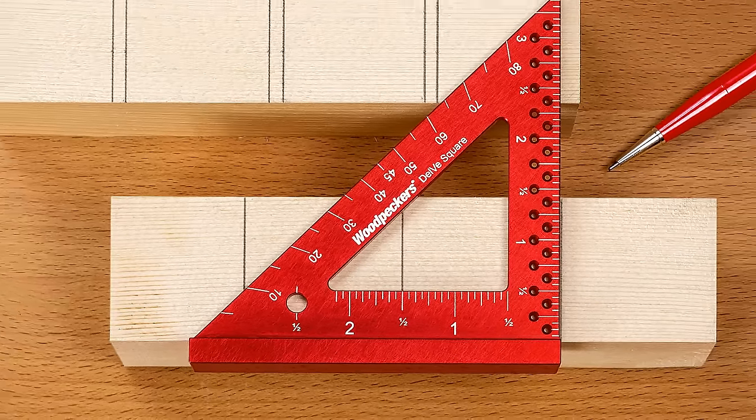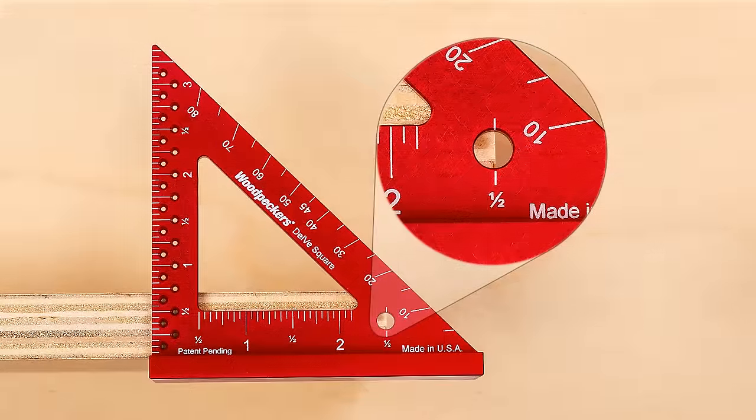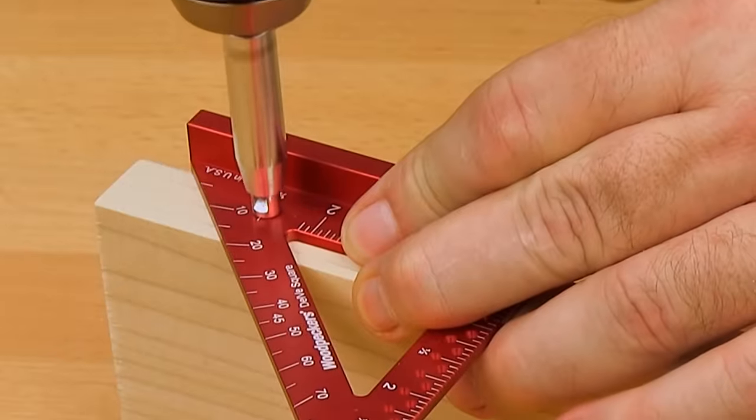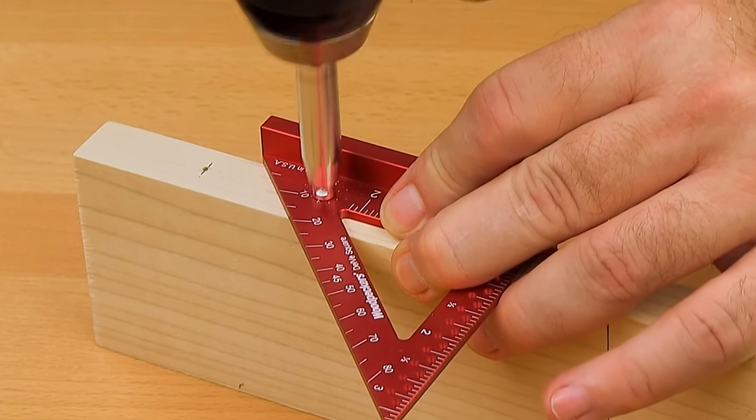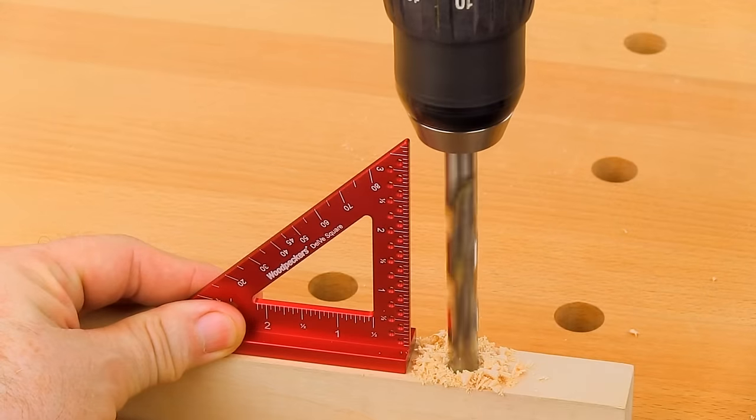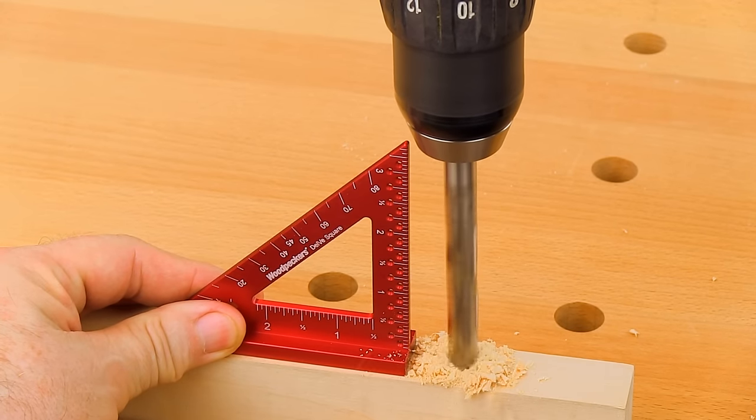Use the inside measurement scale to make repetitive marks. Use the peephole to sight the end of a board for measuring. Use the peephole with a VIX bit to drill pilot holes in the center of the edge of your ¾ inch stock. Stand the Delve Square on its base and use it as a drill guide for handheld hole drilling.